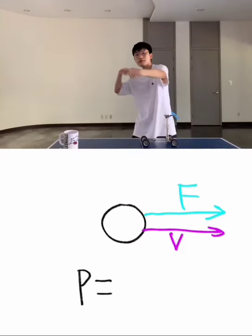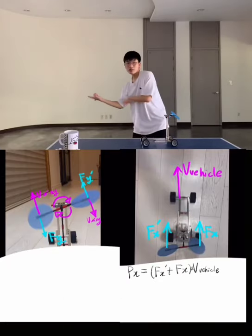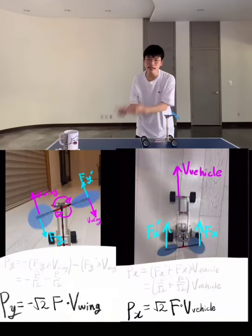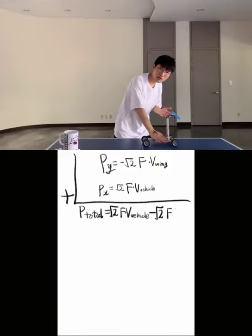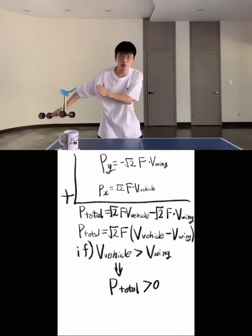Power is velocity times force, and if those are opposing, the power is negative. The X forces make this power and the Y forces make a negative power. So, if my vehicle is moving faster than its wing, the total power is positive and the vehicle can go faster than the wind.